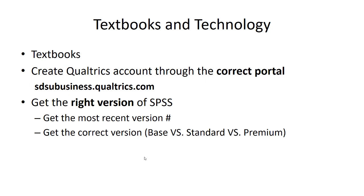Unfortunately, there is one expensive component of this course, and that's the statistical software SPSS. Make sure you purchase the most recent version of SPSS — at the time of this recording we're on version 25, but IBM has a propensity to make a new version release every single year. Make sure you order the correct version. For students, there's the GradPak base, GradPak standard, and GradPak premium. You'll need to purchase the standard version. It's a little bit more, but it has some functionality and features that are valuable to you. If you check the syllabus, I recommend a few online dealers you can use to purchase and install the software.